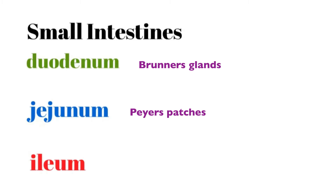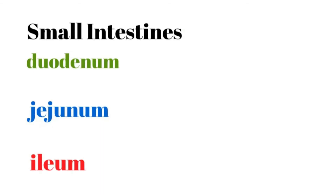The big take-home message from the small intestine is that it utilizes four different mechanisms to increase surface area, allowing for the greatest amount of absorption of nutrients, minerals, vitamins, and water into the bloodstream. The first mechanism is length — the small intestine is dramatically longer than the large intestine, so greater length means greater surface area. However, we are still confined by space within the abdominal cavity, so the small intestine incorporates three other aspects.